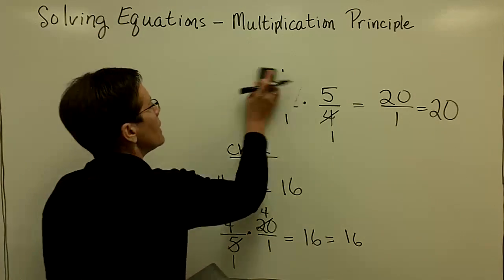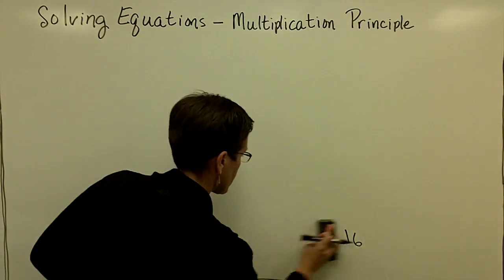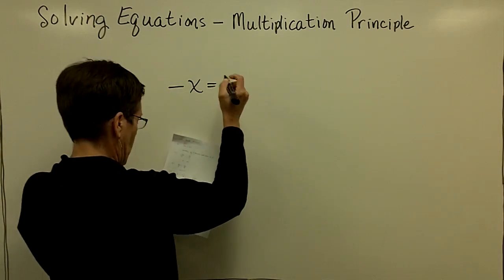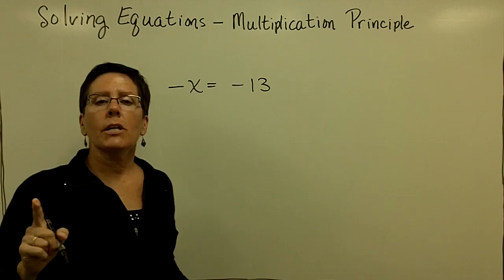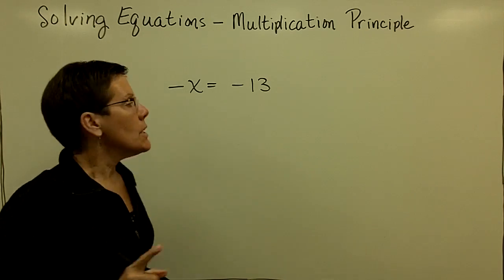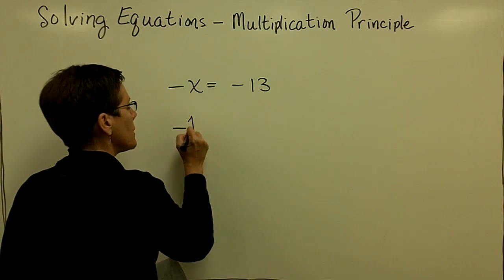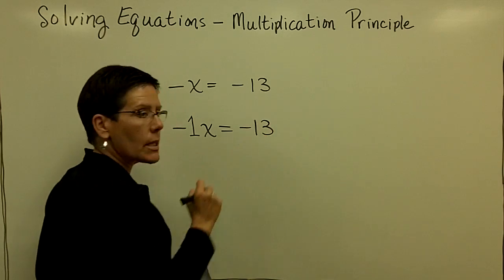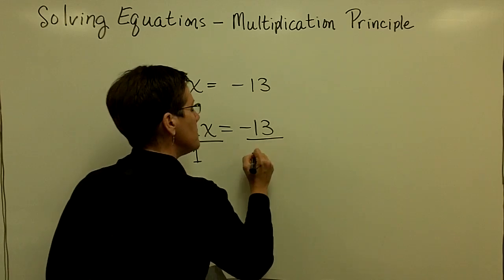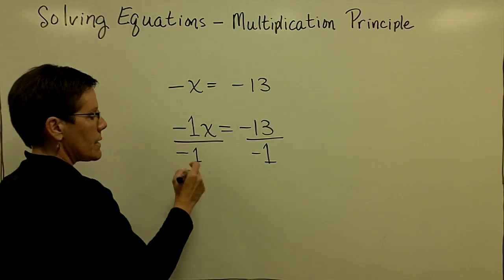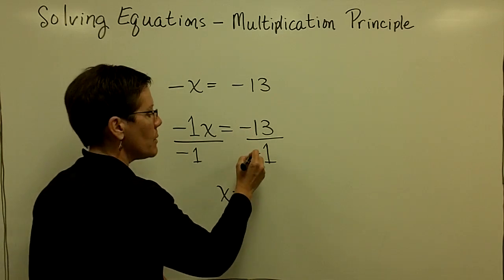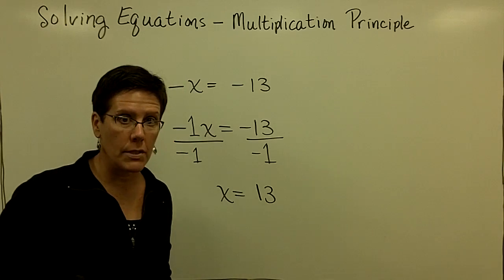Let's do one where there's a negative sign in front of the variable x. So I have a negative x equals a negative 13. And what I need you to understand is that there's no number written in front of the variable x that's recognized to be a 1. So this one is really a negative 1x equals a negative 13. And so what you need to do to both sides is divide both sides by that negative 1. And that makes this become just a positive x, a positive 1x. And a negative divided by a negative is a positive. 13 divided by 1 is 13.